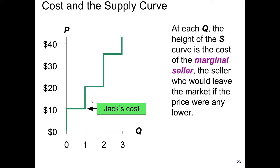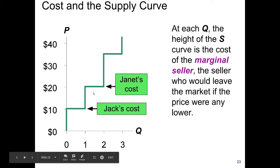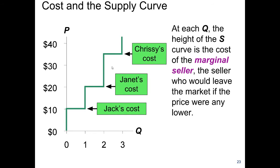The height of the supply curve between 1 and 2 is $20, which is Janet's cost of the grass cutter. And the height between 2 and 3 is Chrissy's cost. So reading the supply curve vertically tells us the cost of production for different service providers or suppliers.